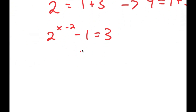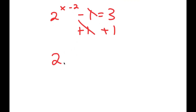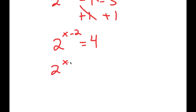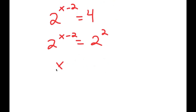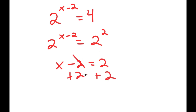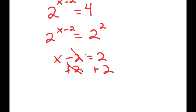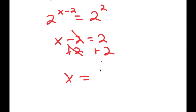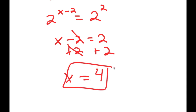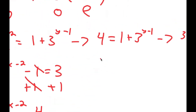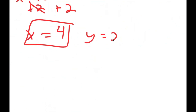For 2 to the power of x minus 2 minus 1 equals 3, I add 1 on both sides to get 2 to the power of x minus 2 equals 2 squared. This means x minus 2 equals 2, and adding 2 on both sides gives x equals 4. So my solution is x equals 4 and y equals 2.